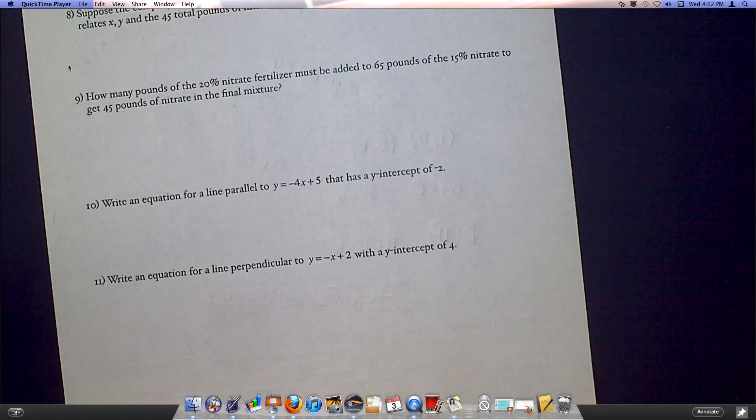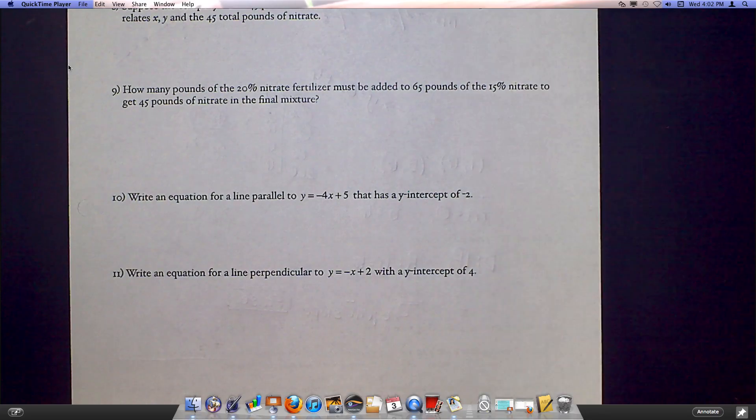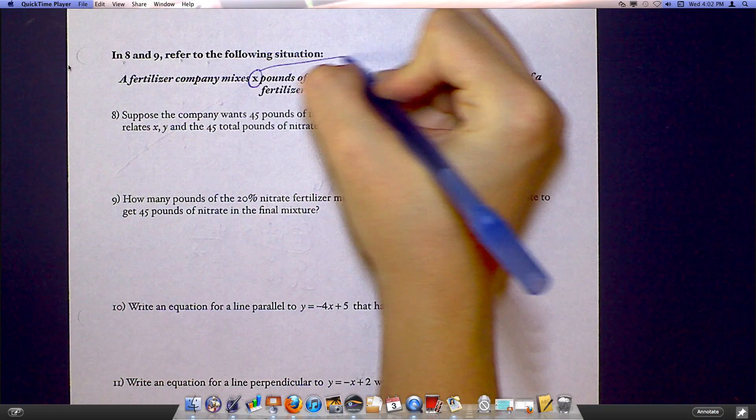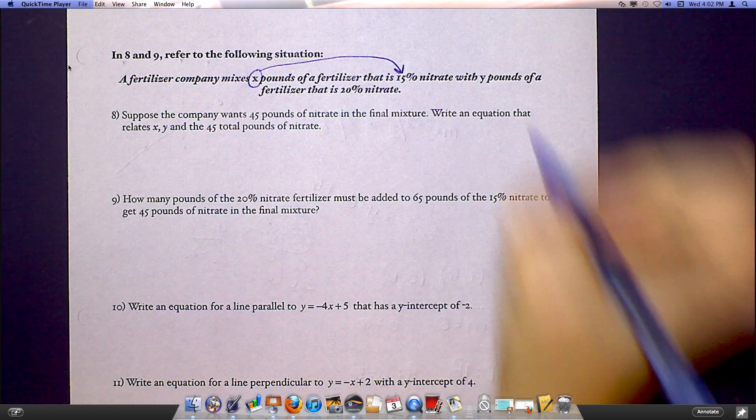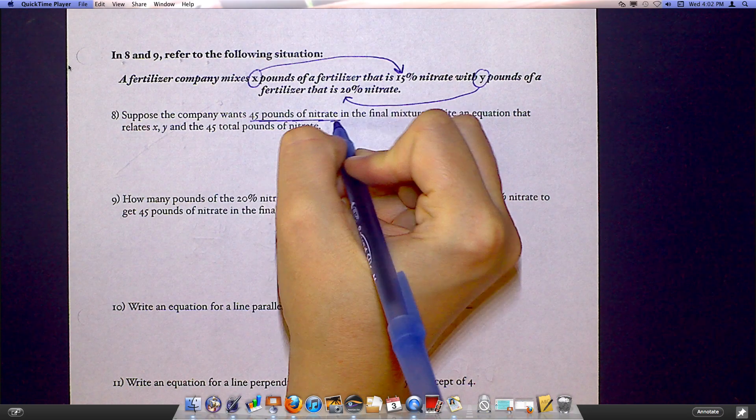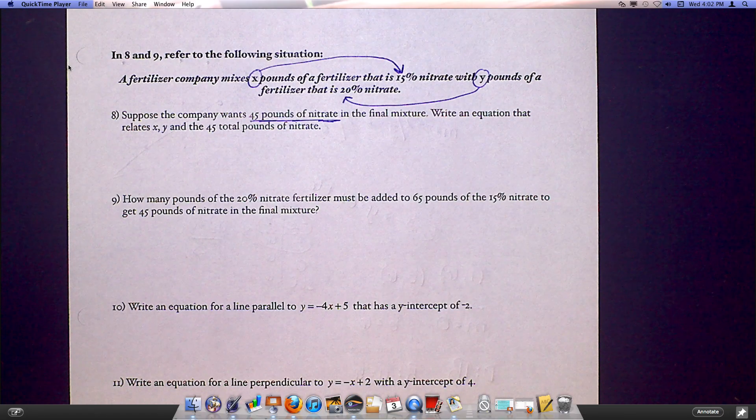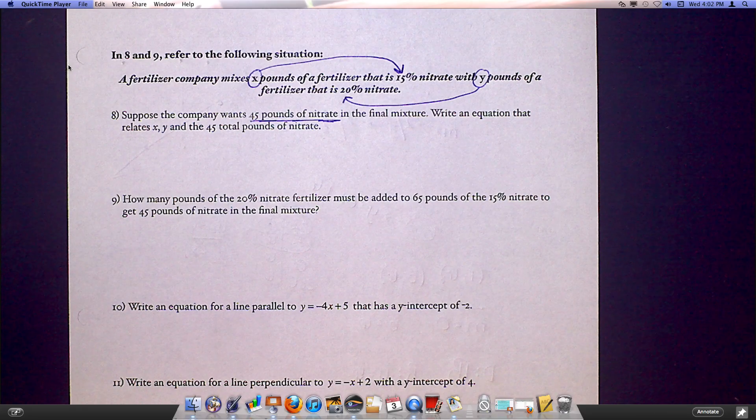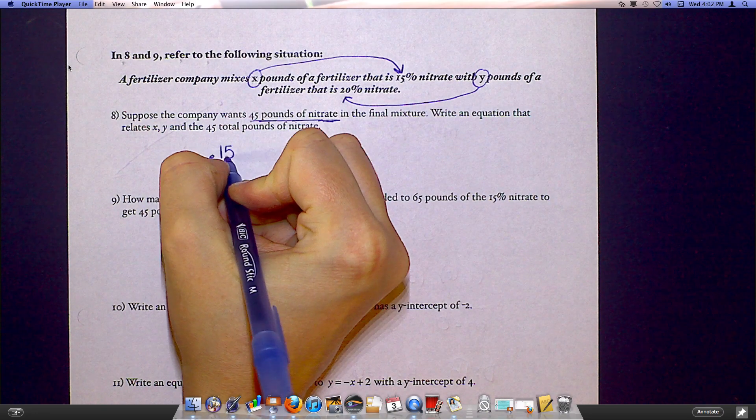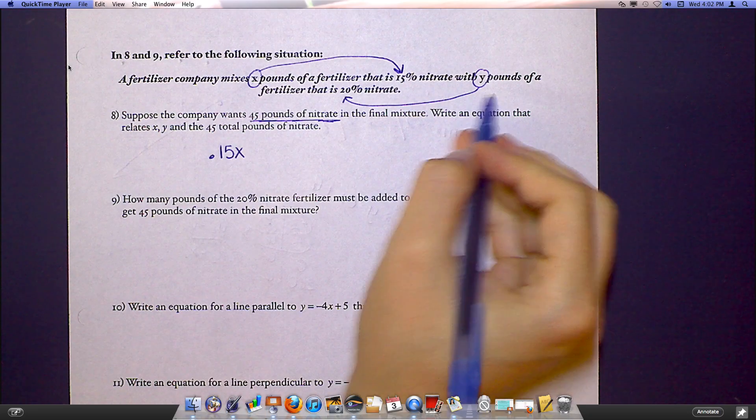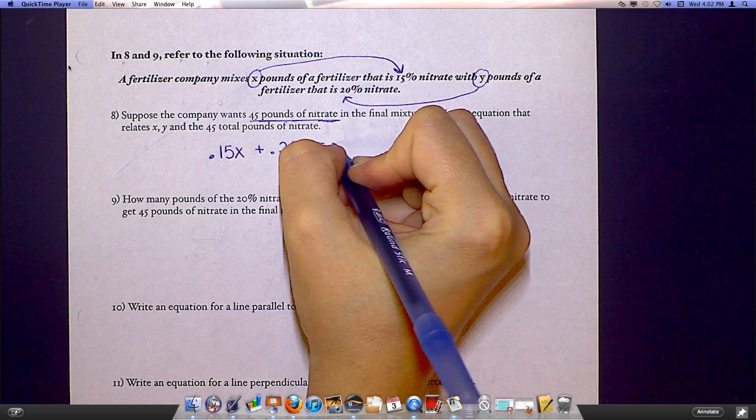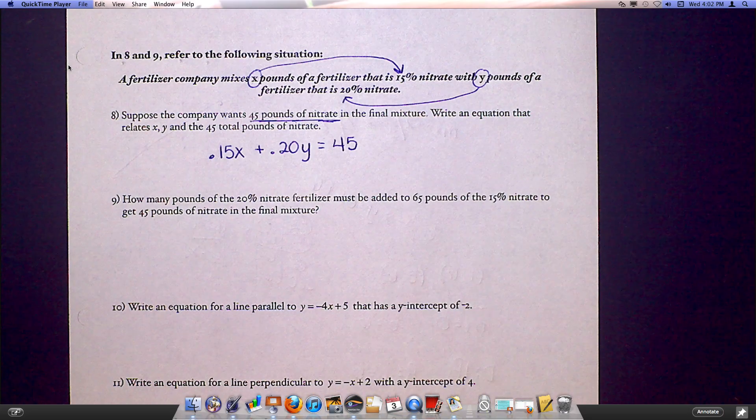Let's look at the back. A fertilizer company mixes X pounds of a fertilizer that is 15% nitrate. So X pounds with 15%, with Y pounds that is 20% nitrate. And number eight, I know I have 45 pounds of nitrate total. So this is like those ones we've been doing in class with the chemistry type problems where you're mixing the solutions. So I would do 15% of X. So that would be 0.15X plus 20% of Y, 0.20Y. And I know my total needs to be 45 pounds. So that would be my equation.